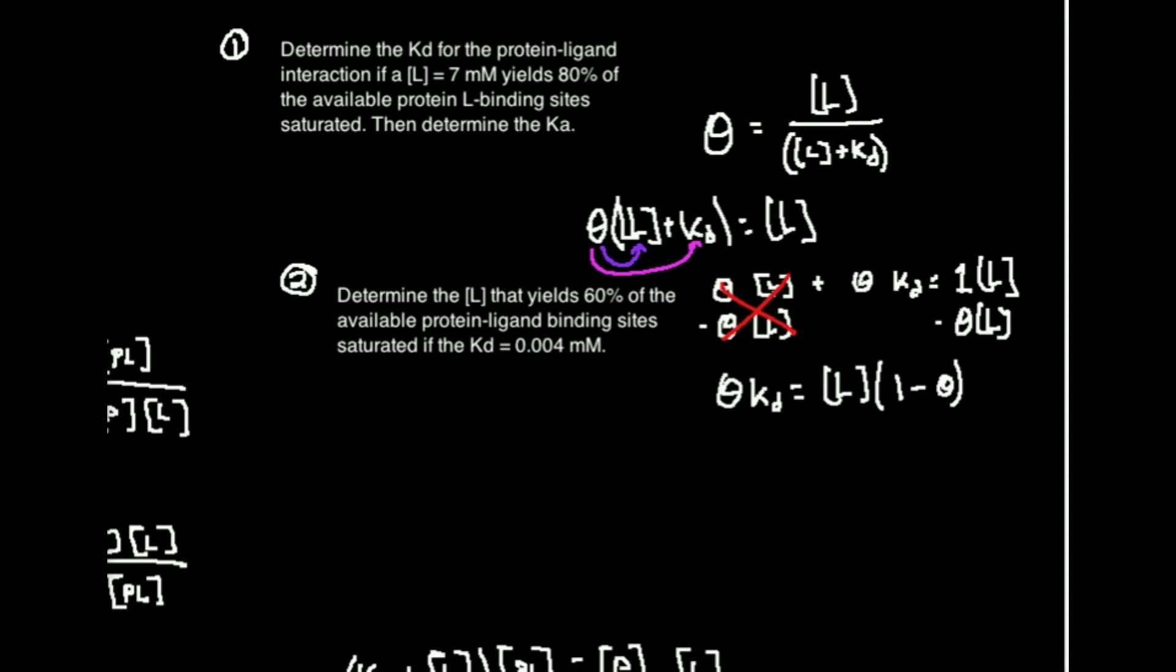Notice then what I can do to isolate the ligand concentration is divide both sides by 1 minus theta, and that cancels this over there, and ultimately what I'm left with is the ligand concentration that I want is theta times the dissociation constant divided by 1 minus theta. So all of these things I actually do know.